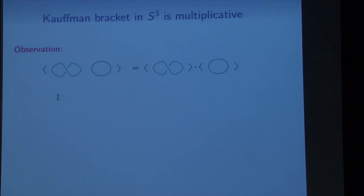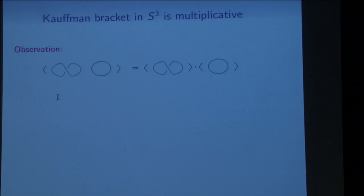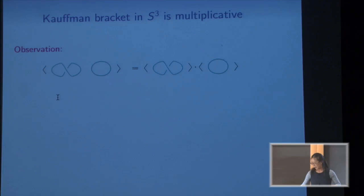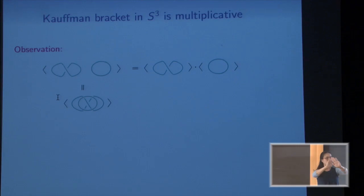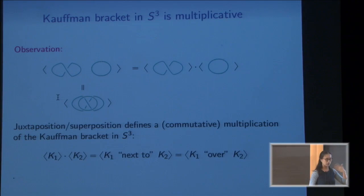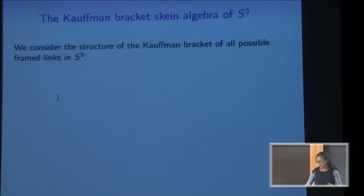Here's another observation: if I have two links and put them right next to each other and take the Kauffman bracket, resolving crossings in one while keeping the other shows everything gets carried through as a multiple. This shows that the Kauffman bracket of two links placed side by side equals the product of each bracket separately. In S³ you can also put them on top of each other — that's an isotopy — so whether you juxtapose or superpose, you get multiplication of the Kauffman brackets, and it's commutative.